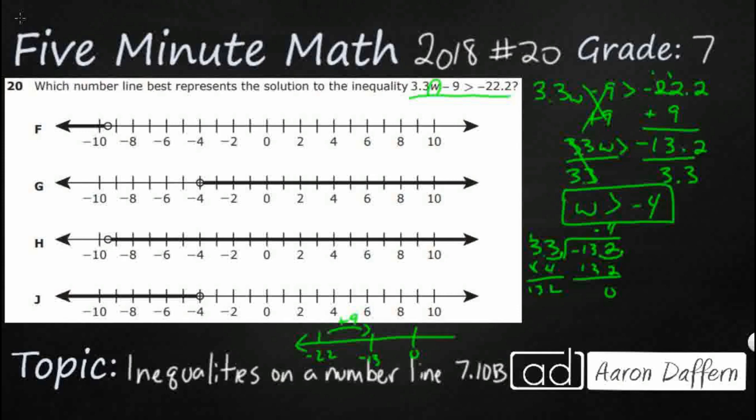So it looks like I've got it here. W is greater than negative 4. So here's my negative 4. So obviously we have to figure out which way is greater than. If we're going greater than, we are going to go this way.